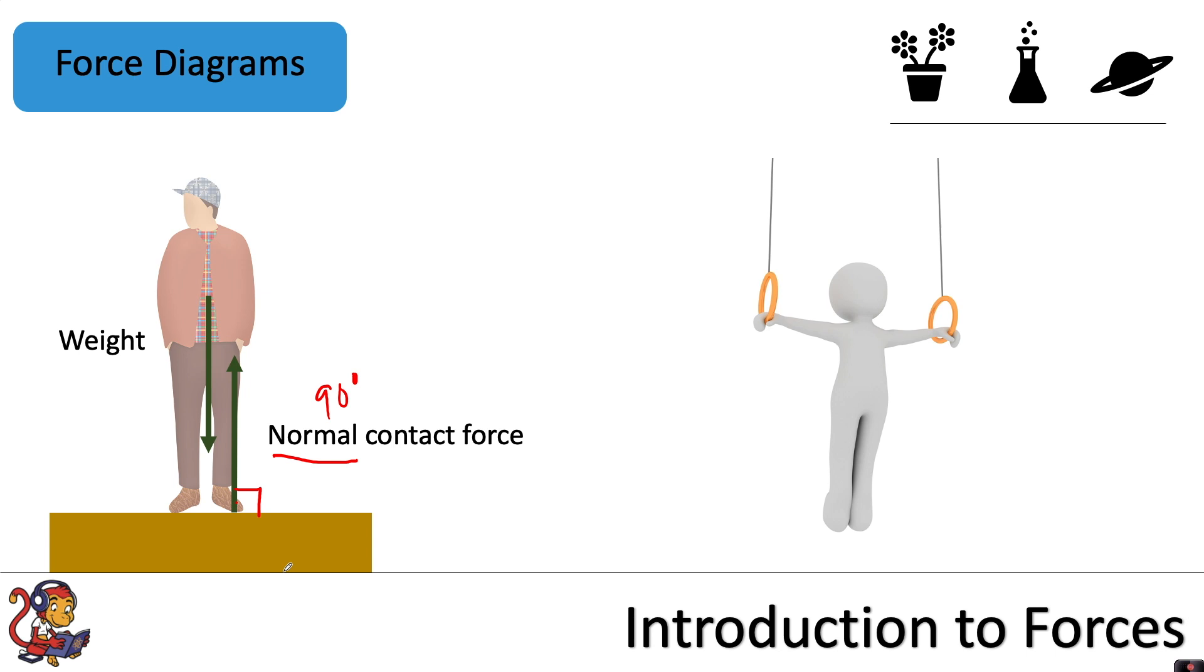Here we've got someone suspended on some ropes. We've got their weight acting downwards. Again, you could put gravitational force, but weight is better. You've got tension acting upwards on both sides, pulling the person upwards. And where they're touching each ring, you will have a normal contact force as well.